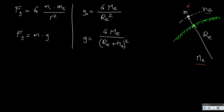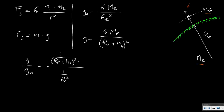From this we can see the relation between the two types of g. We simply divide them: g divided by g0. The gravity constant and the mass of the earth cancel, which means we get 1 divided by (Re + hg) squared on top, and 1 divided by Re squared on the bottom. In other words, this becomes our relation for the two g's, because that's the origin of our error.